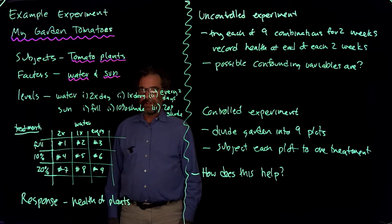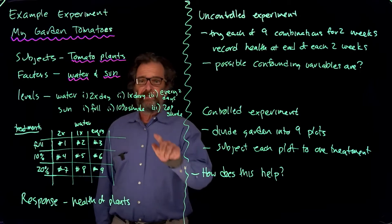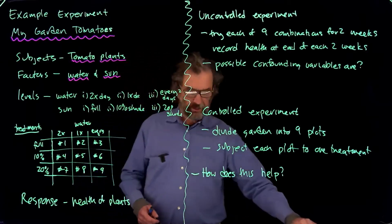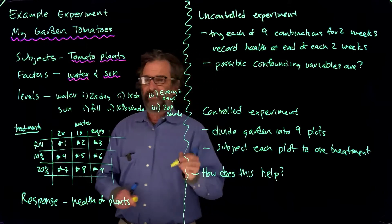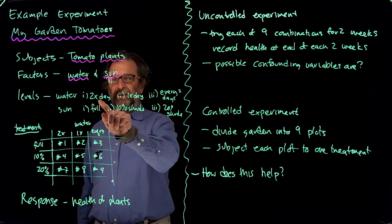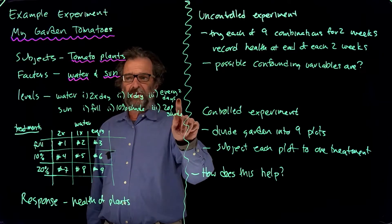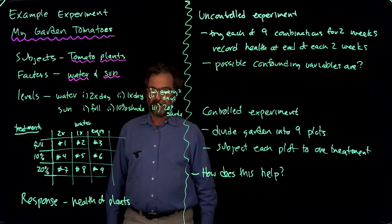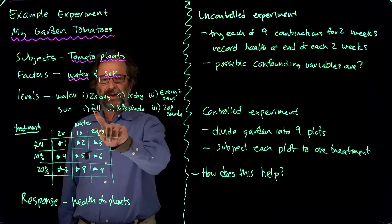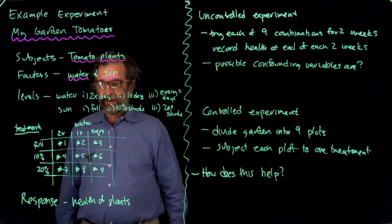I use a drip system, so it doesn't use a whole lot of water, but it tends to dry out pretty quickly. So I can water either morning and evening, or just once a day in the morning, or every two days. Those are my watering schemes. And then in terms of sun, full sun, 10% shade, or 20% shade are possibilities for the amount of sun they might have.